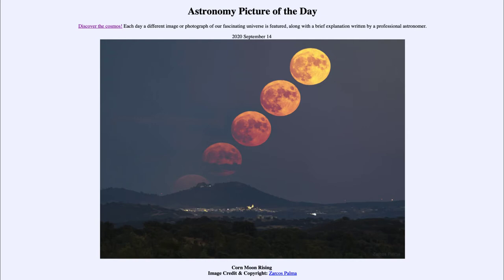So what do we see here? This is five images of the moon as it rises up above the horizon. You can see a couple of things change — first of all, you see the coloration change from being a very deep red close to the horizon to more of an orangish to yellow as it gets higher up above.